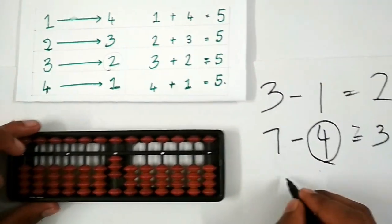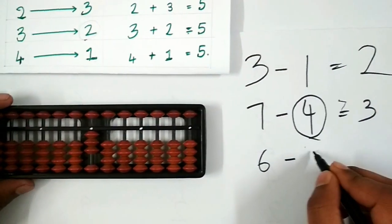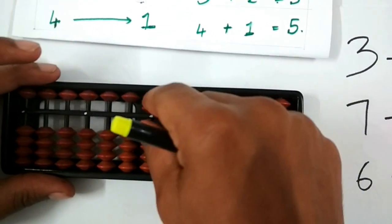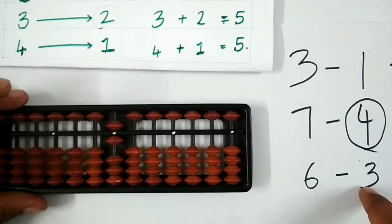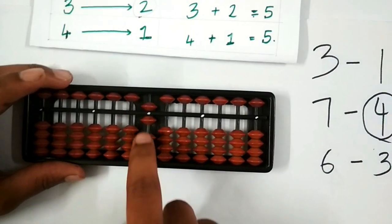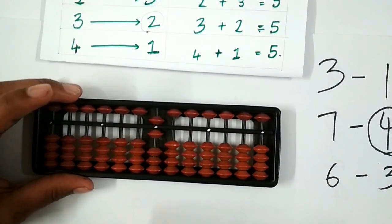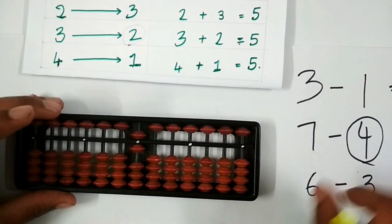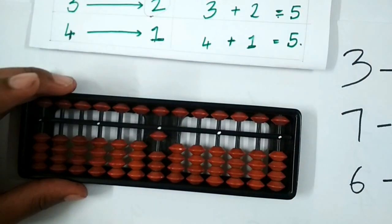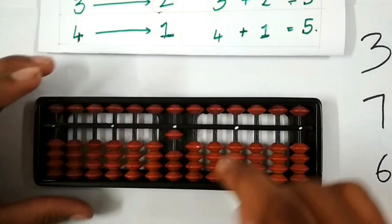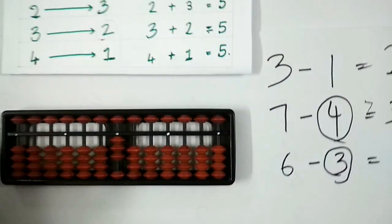Let us take another example: 6 minus 3. The first step is to place 6 on the abacus. We have to subtract 3 from 6, so we check whether there are enough beads at the lower end. We see that we have only 1 bead, so we need to use the friends concept. The second step is removing 5 and checking who the friend of 3 is. The friend of 3 is 2, so we add 2 at the lower end and get the answer as 3.